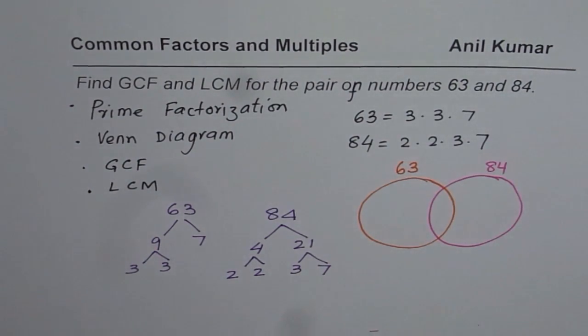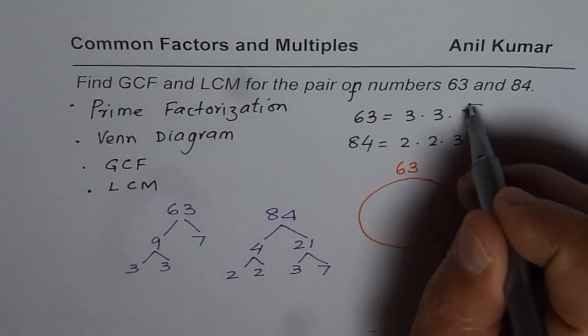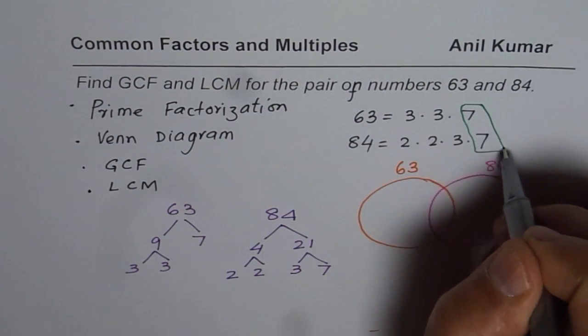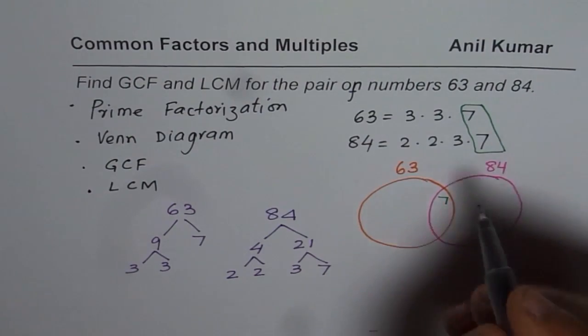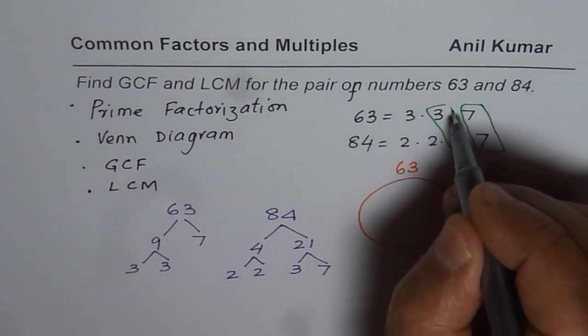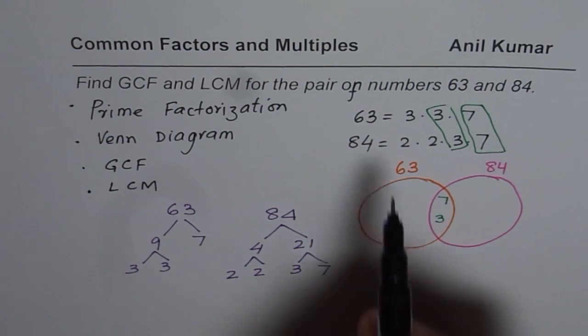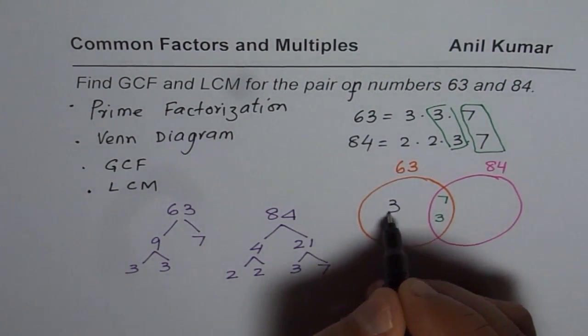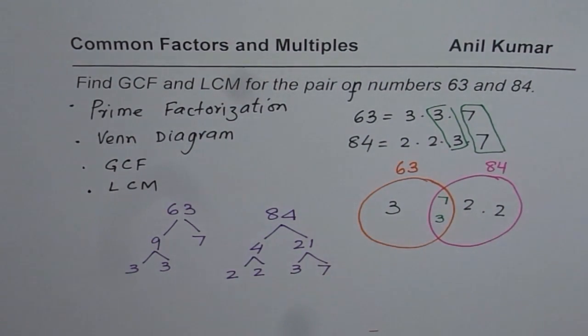So when you begin writing numbers in the Venn diagram, let us first find common factors. We see that 7 is common, so the common factors will go inside, in the common portion. 3 is also common, so 3 will also go here. Now we can fill in the other factors. For 63, the other factor is 3. For 84, the other factors are 2 times 2. So these are all the factors.